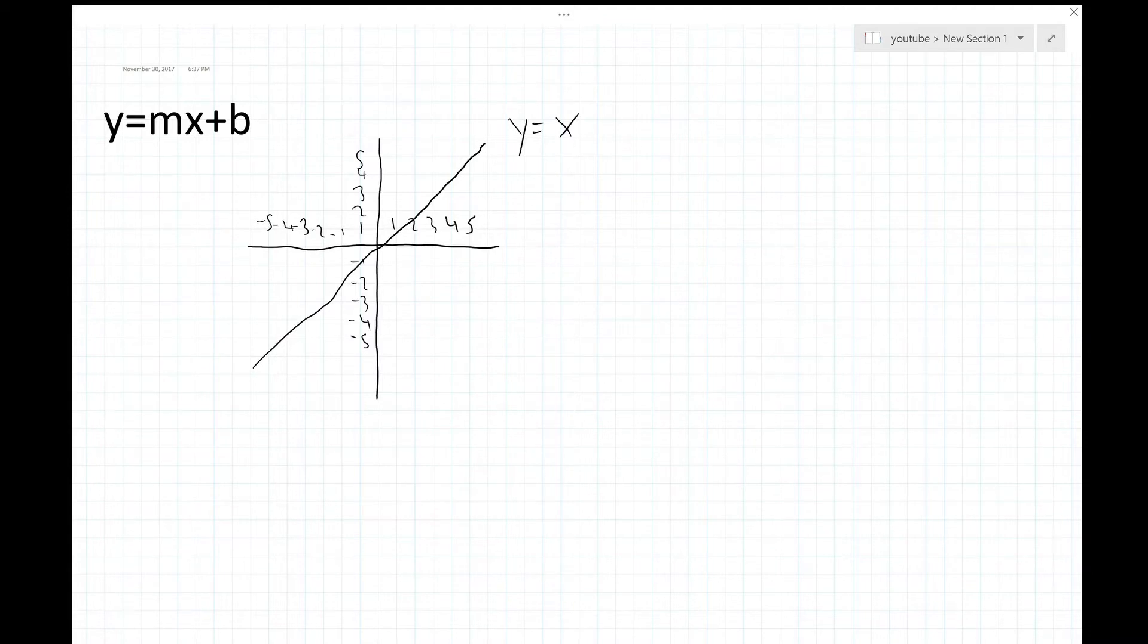Y equals mx plus b. What does m stand for? M is the slope of the line. Slope is kind of self-explanatory. The meaning of it pretty much just means how steep the line is. A larger slope means it's steeper. A smaller number would mean it's more flat. The equation for slope, the formula is y1 minus y2 over x1 minus x2.